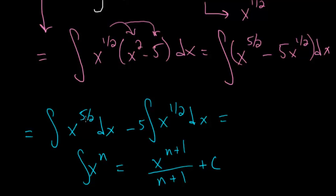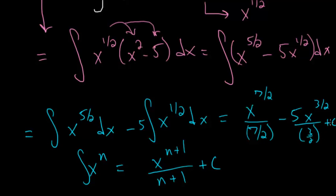To x to the five-halves, we will add one to this, so it becomes x to the seven-halves, and then we'll divide by this new exponent, seven-halves. We'll have minus five times x to the one-half plus one, which would be three-halves, and then divide it by three-halves. Then we have plus a constant on the outside.